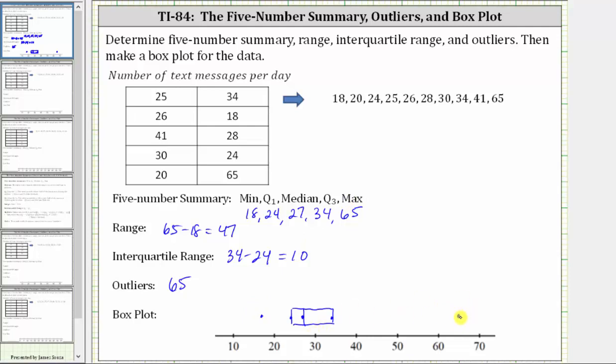But because the maximum of 65 is an outlier, we do not draw the whisker out to 65. We actually make a point at 41, which would be here for the whisker on the right. And the whisker on the left goes all the way out to the minimum of 18 because 18 is not an outlier. And this would be our box and whisker plot for the given data, including the outlier. Sometimes you will see a small vertical segment here and here at the end of the whiskers. I hope you found this helpful.